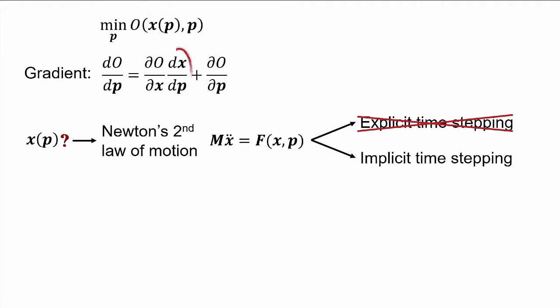X of P does not have a closed-form expression. And this poses a problem when we want to compute our gradient, because to do that we need this total derivative, dX/dP, which is not straightforward to compute when there is no explicit mapping between X and P.